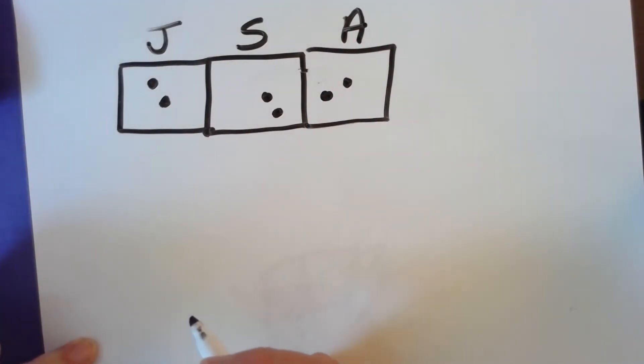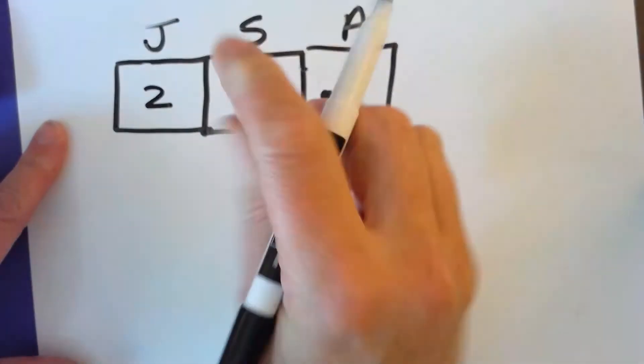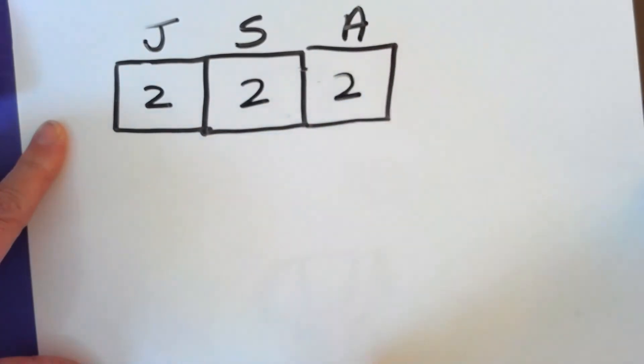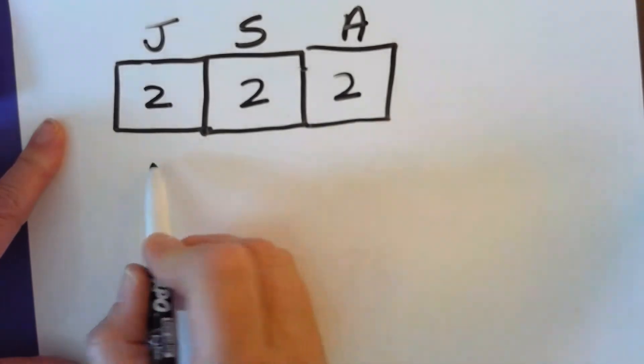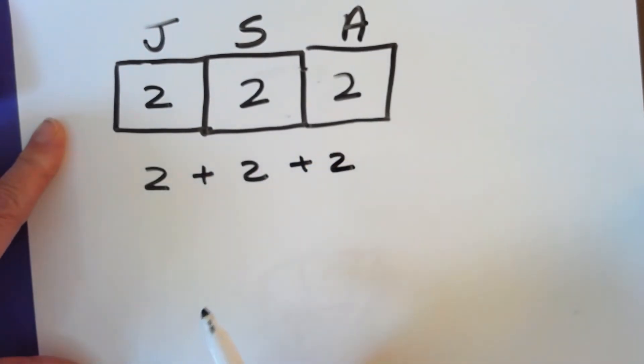Now let's change our box to show the number instead of these counters. So I'm going to write the number two here. I'm going to write a number two here and a number two here. So what do we do when we know the parts and they're equal? We add them to find the whole. Write the repeated addition equation to find the total for this tape diagram. Two plus two plus two is my repeated addition.